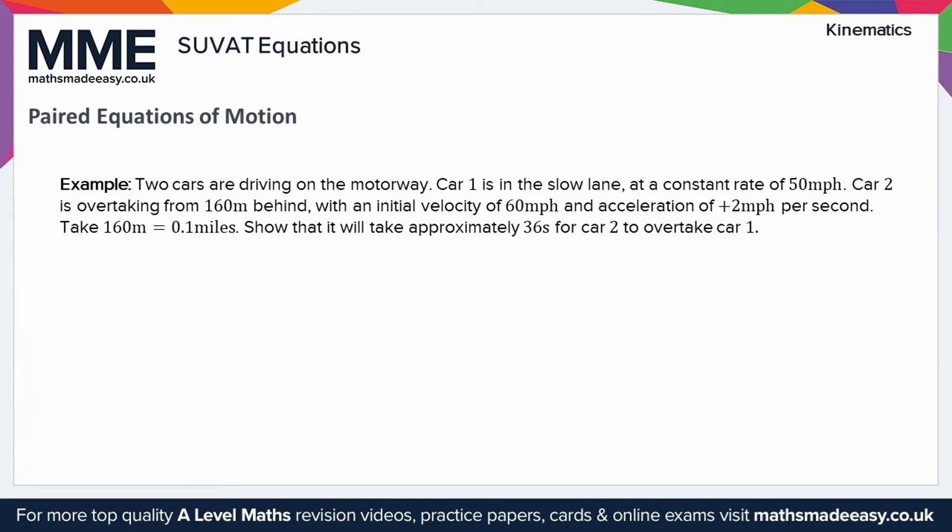The first thing I'm going to do is write down all the variables: S, U, V, A, and T. I'm going to put a little 1, so S1, U1, V1, A1, T1, so we can tell when we're talking about car 1 and car 2. We're going to have S2, U2, V2, A2, and T2.